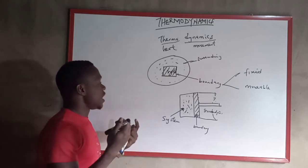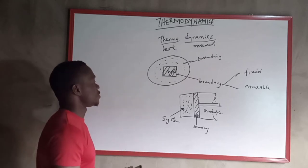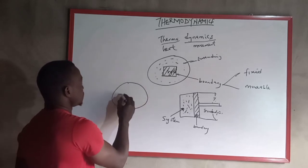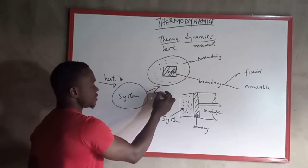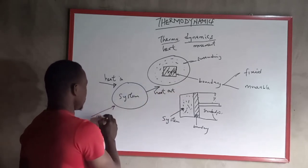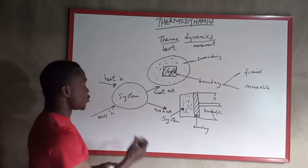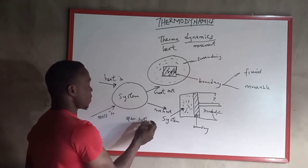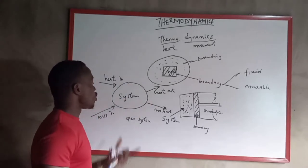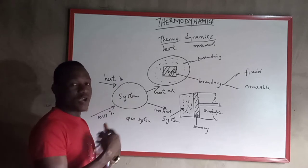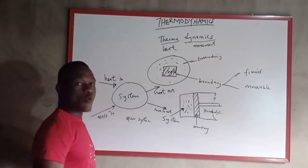The system may allow heat and mass to pass through it. If heat can go in and out, and mass can go in and out, this kind of system is known as the open system — because heat and mass can freely enter and leave. An example is the human body: we can take in matter, we can eat food, and we can also pass it out. So every living organism is an example of an open system.